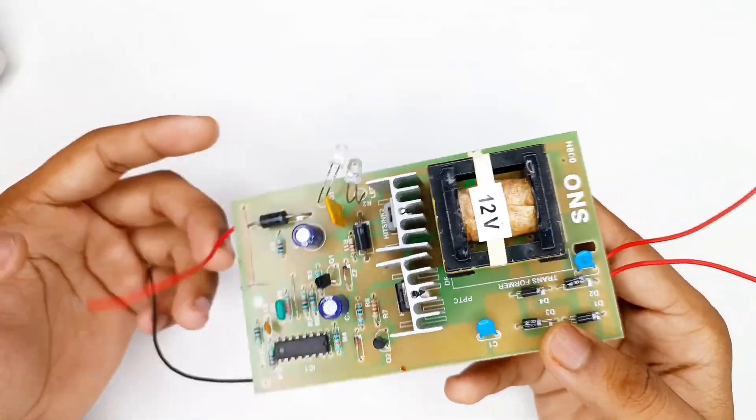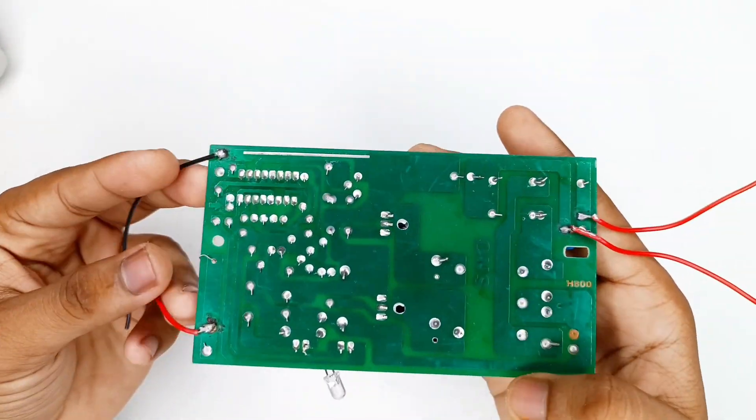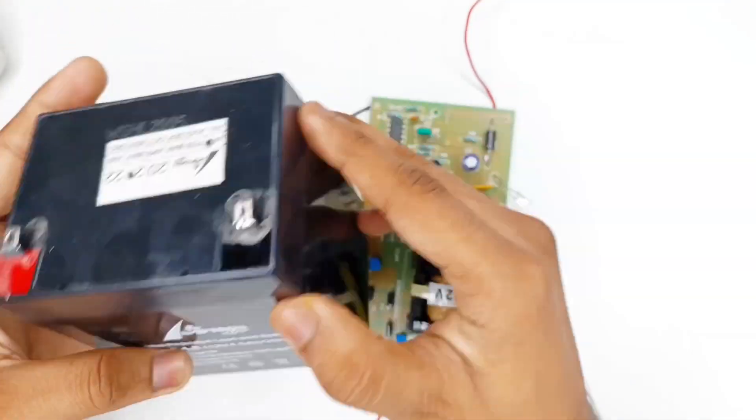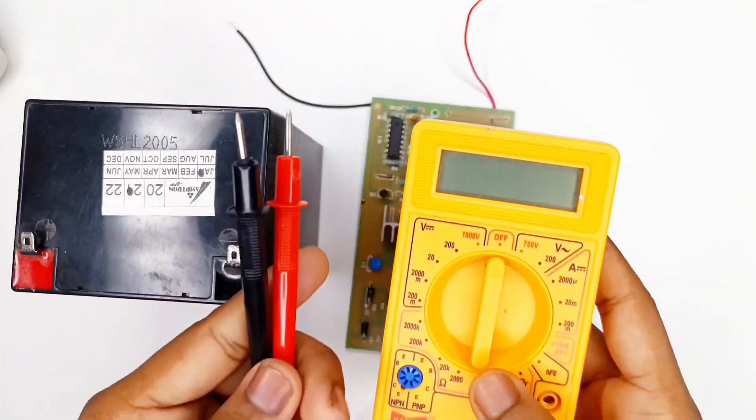This is a 100 watt inverter circuit board. It's a 12 volt input and 220 volts AC output. This is a 12 volt battery, 4.5 amp hour. Let's test the inverter circuit board.